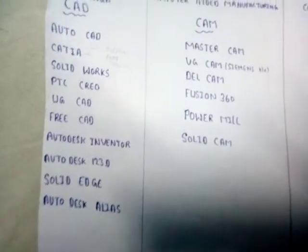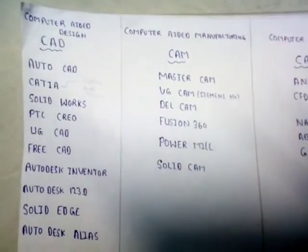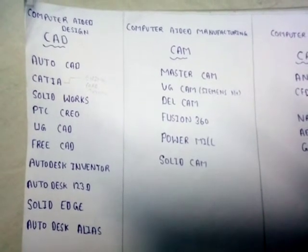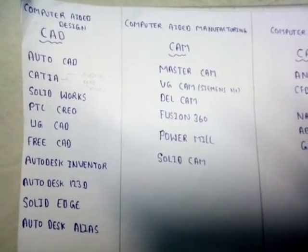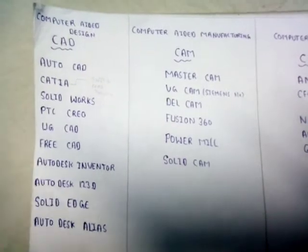Coming to computer-aided manufacturing, the softwares include Mastercam, UG Cam, Siemens NX, DelCAM, Fusion 360, PowerMill, and SolidCAM. These are used to manufacture things.